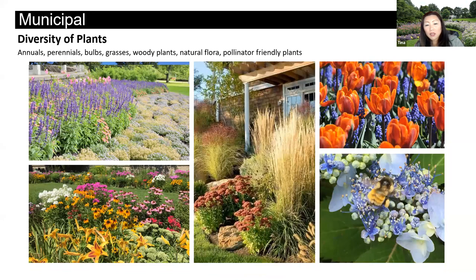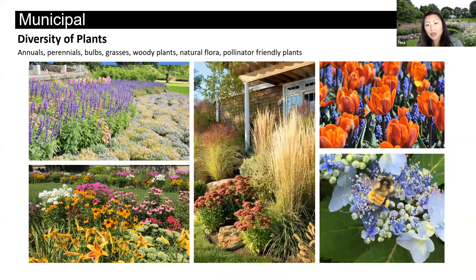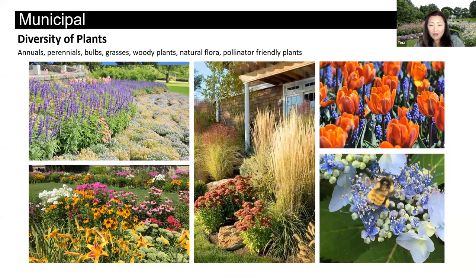Regarding diversity of plants: we talk about annuals, perennials, bulbs, and a mix of different bulbs for the springtime. Then you would change to annuals, and the perennials come up behind when the bulbs are done. Ornamental grasses and pollinator-friendly plants are also included — here is shown a hydrangea that has a ton of bees on it.